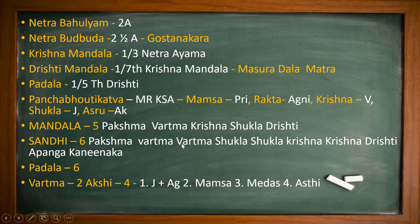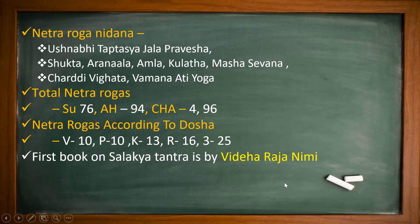6 Sandhis: Pakshma-Vartma, Vartma-Shukla, Shukla-Krishna, Krishna-Drishti, Abhanga, and Kaninaka. 6 Padalas: Vartma — 2, Akshi — 4. 1st is Jala-Agni Ashraya, 2nd Mamsa, 3rd Medha, and 4th is Asthi.